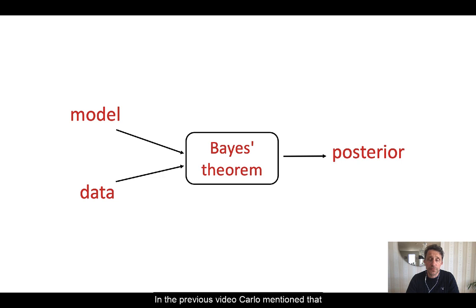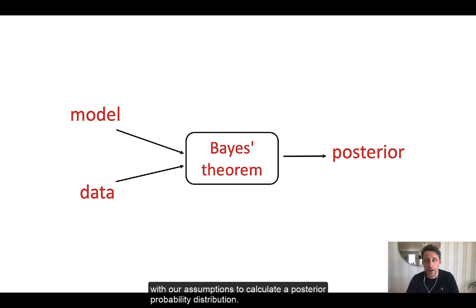In the previous video, Carlo mentioned that Bayes' theorem can be seen as an engine that combines evidence with our assumptions to calculate a posterior probability distribution. We can use many algorithms as engines.